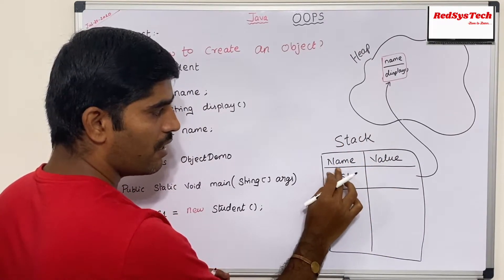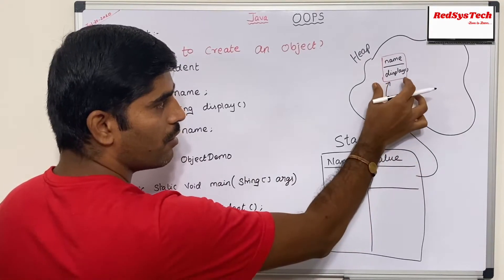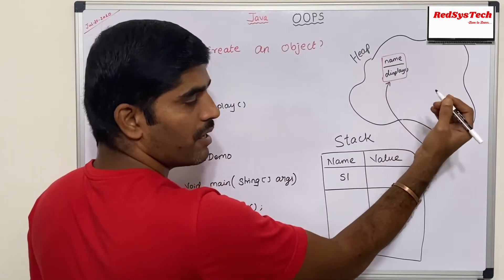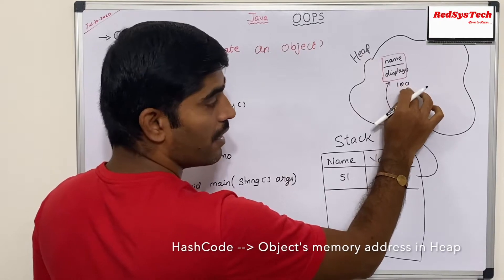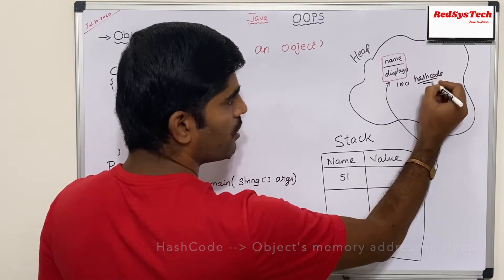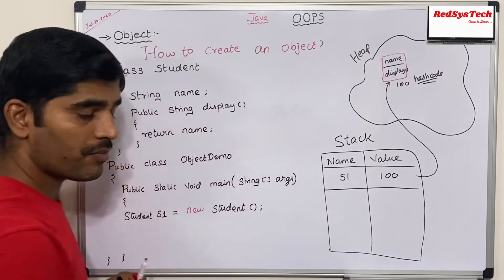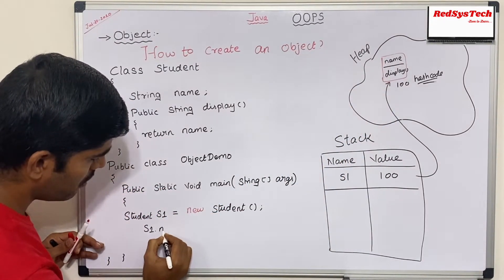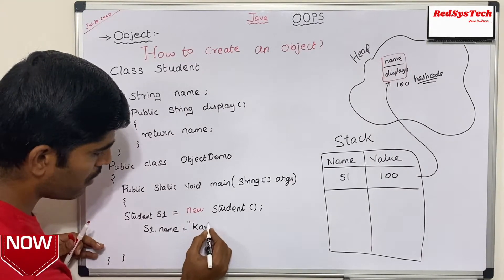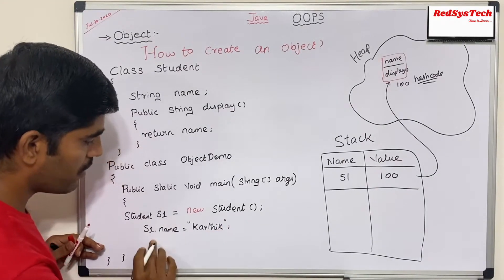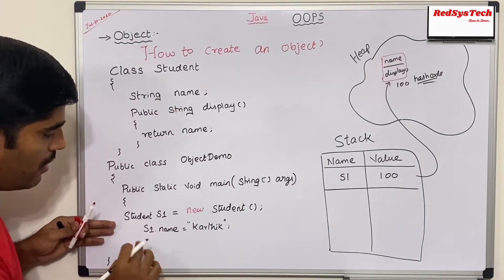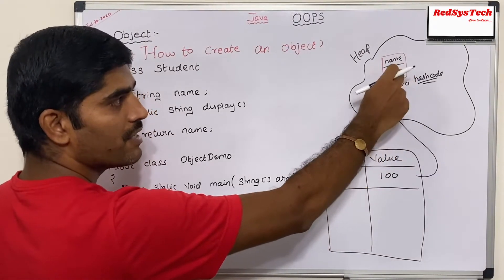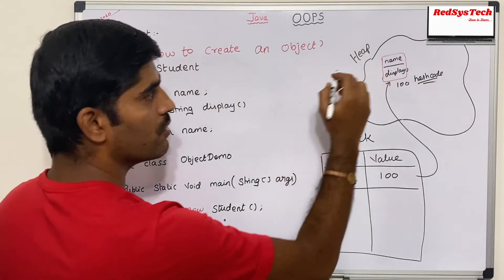Stack will have the name s1 and it stores the value of this object reference. In heap memory, when JVM creates an object it will have a memory address — let's say it is 100. This address 100 is called a hash code in Java. This hash code is stored as the value in the stack. So when I say s1, it is stored in stack and refers to that particular object. When I say s1.name = "Karthik", JVM executes line by line from a top-down approach. When it sees s1.name = "Karthik", it checks in the stack, finds s1, refers to the object with the matching hash code, and then assigns the name as Karthik in the heap object.